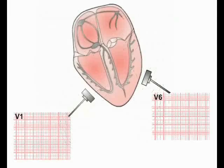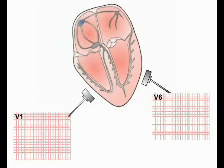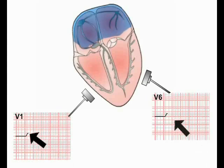During each cardiac cycle, atrial contraction is associated with a wave of depolarization spreading over the chambers. As the atria sit at the back of the chest cavity, this wave of depolarization is not only spreading downwards and towards the left from the SA node, but also outwards toward the front of the chest and therefore towards the chest leads. As this depolarizing current is moving towards the leads, it produces a positive deflection on the ECG paper. This is the P wave of atrial depolarization.